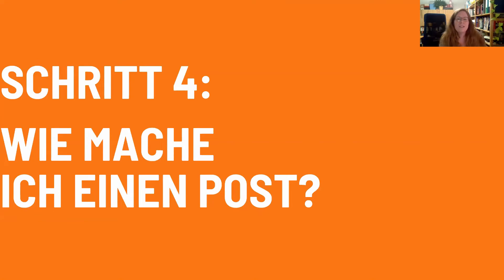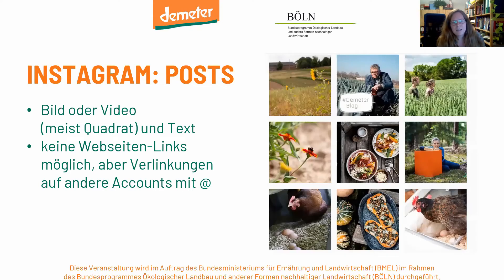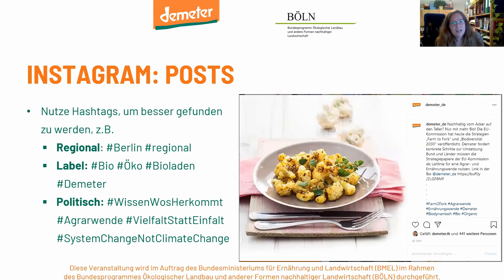Wie macht man jetzt eigentlich einen Post? Bei Instagram besteht ein Post aus einem Bild oder Video – diese werden in der Vorschau als Quadrate angezeigt – und einem zugehörigen Text. Man hat keine Möglichkeit, Webseitenlinks zu setzen, aber man kann andere Accounts mit dem @-Zeichen verlinken. Dann kann man Hashtags nutzen, um besser gefunden zu werden – hier bieten sich regionale Hashtags an, etwa Berlin oder Brandenburg, um zu zeigen, wo der Hof oder Laden ist.